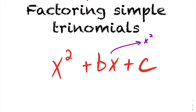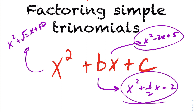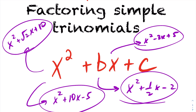One example of a simple trinomial might be x squared minus 3x plus 5. Another example might be x squared plus one-half x minus 2. You could have x squared minus root 2x plus 10, or x squared plus 10x minus 5. These are all examples of simple trinomials. Some of these you may not want to factor; some of them you cannot factor. But they still fall under the category of a simple trinomial.